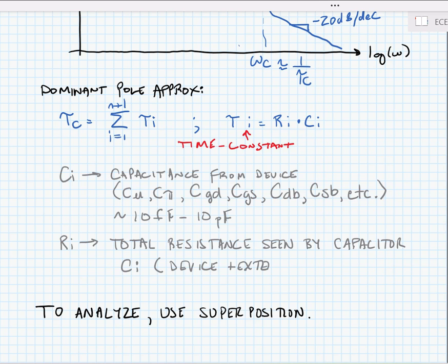These are all the device resistances plus any external resistances. Now we're going to find the time constant for each capacitor in our circuit, and so to analyze this we're going to use superposition, so we're going to analyze one capacitor at a time. And we'll start that in the next lesson.